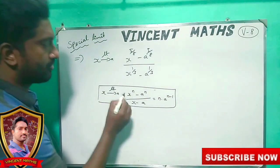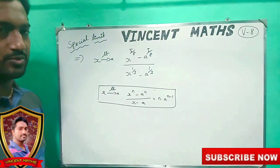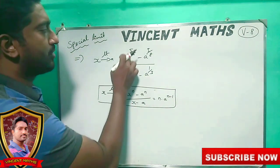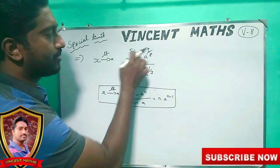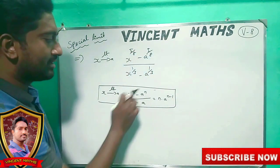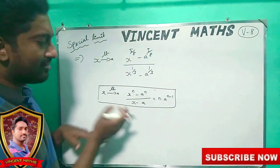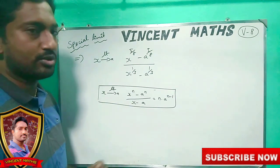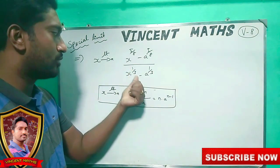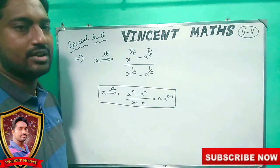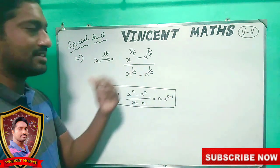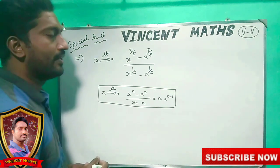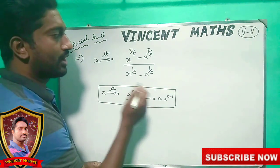In this form, we will use it in this form. Now, we have given that here x power 5 by 8 minus a power 5 by 8. So, n is correct. If we have x power and a power, we will change this form. So, what do we do? We will change the value.